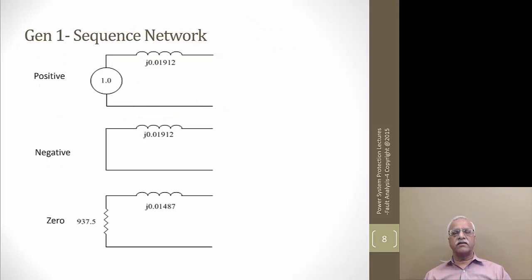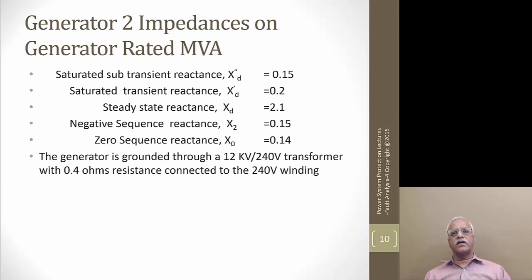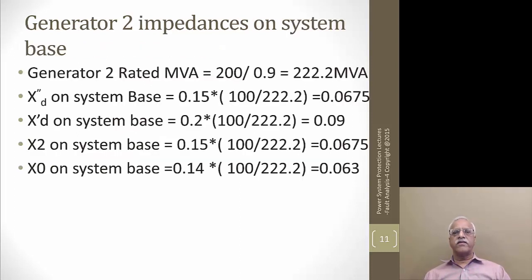The positive sequence, negative sequence, and zero sequence networks for generator one are shown here. For generator two, we go through the same process. This is a 200 megawatt unit at 18 kV, running at 0.9 power factor, with a grounding transformer having 0.4 ohms connected to the secondary side of a 12 kV to 240 V transformer. Looking at the generator data: sub-transient reactance is 0.15, negative sequence is 0.15 per unit on the generator base, and zero sequence is 0.14. It is grounded through a 0.4 ohms resistance.